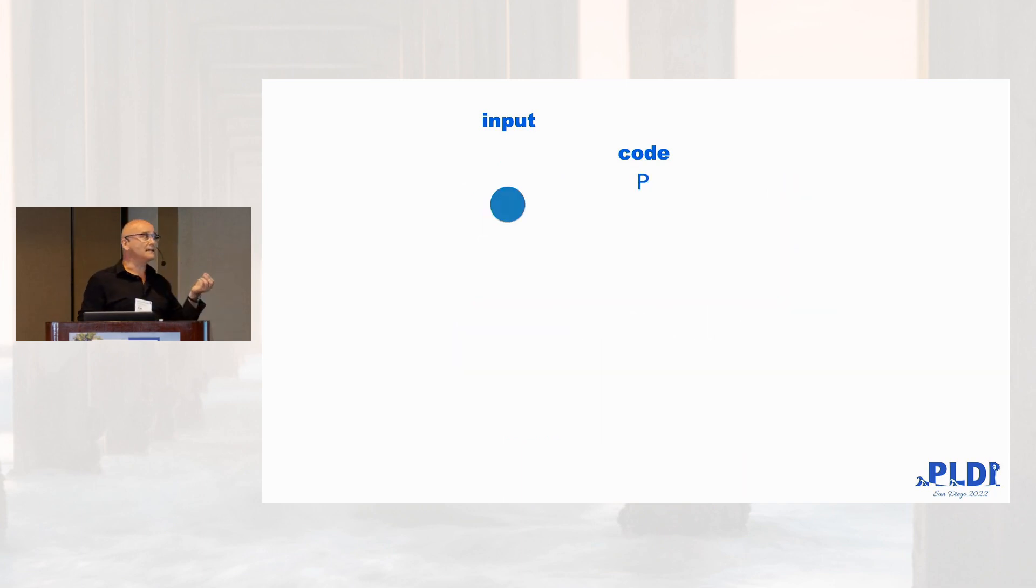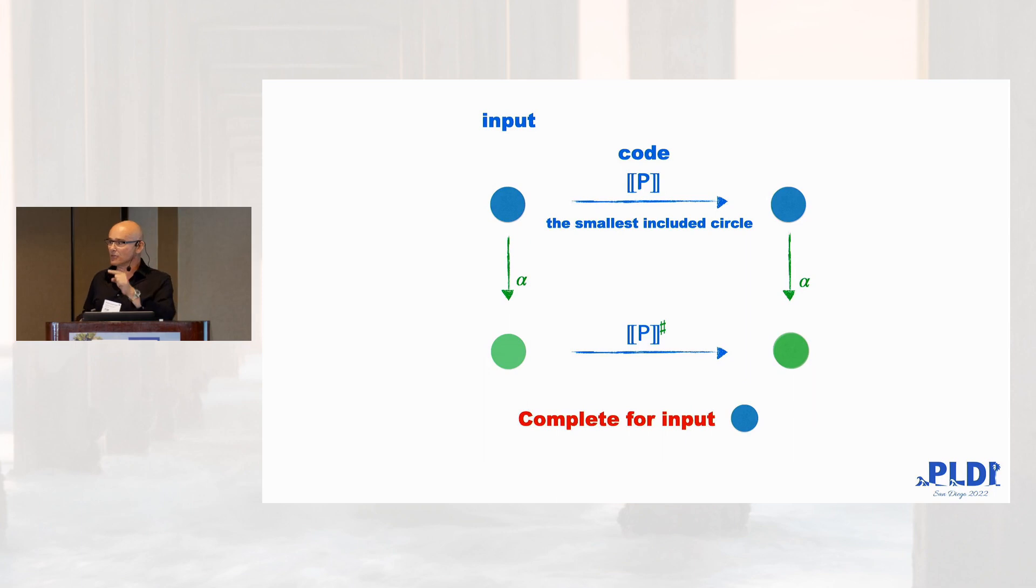While instead, if you have that input, that input runs perfectly because it remains unchanged and the abstract interpreter doesn't lose precision. So, the precision of the abstract interpreter depends on the input and that's the idea of local completeness that we introduce.